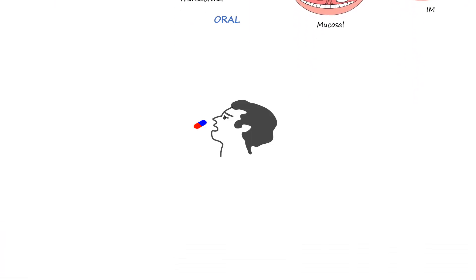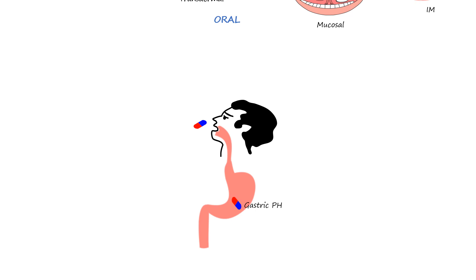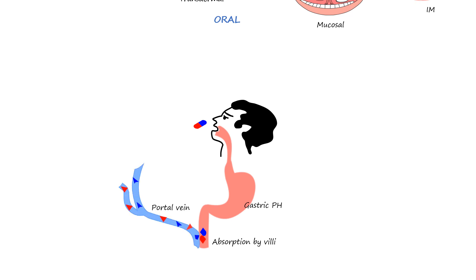Oral drugs are by far the most prescribed method of drug administration. When a drug is taken orally, it enters the digestive system. In the stomach, the drug must dissolve in gastric fluids — a process influenced by the drug's formulation and stomach pH. Once dissolved, the drug moves into the small intestine, which is the primary site of absorption due to its large surface area and rich blood supply. The drug then passes through the intestinal wall into the blood vessels, and travels through the hepatic portal vein directly to the liver. This phase is known as first-pass metabolism.